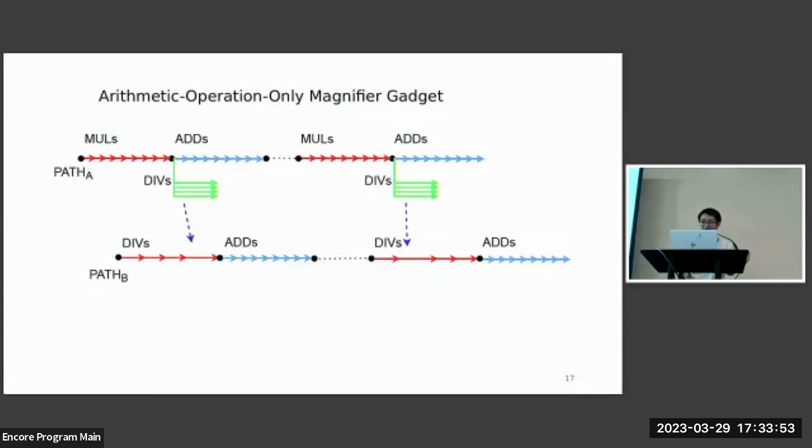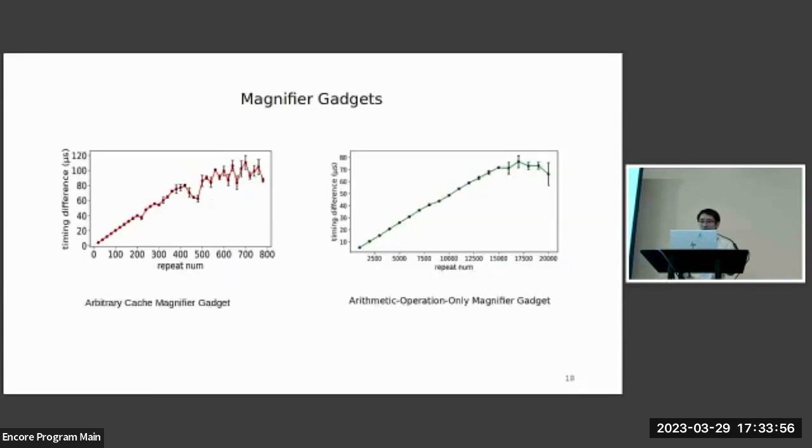So the following results pertain to the arbitrary replacement policy magnify gadget and the arithmetic operation only magnify gadget. The arbitrary replacement policy magnify gadget can magnify the timing gadget to 100 microseconds with minimum noise interference. The arithmetic operation only magnified gadget can magnify it to approximately 70 microseconds. The precise magnification limit can be influenced by factors such as background activities, CPU frequency, and interrupt frequency. We intend to conduct future research to quantify those dependencies.